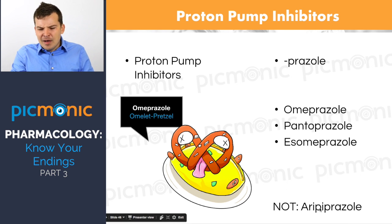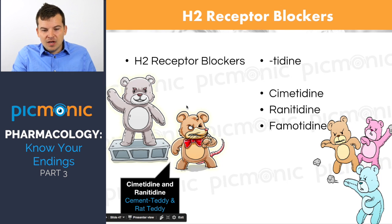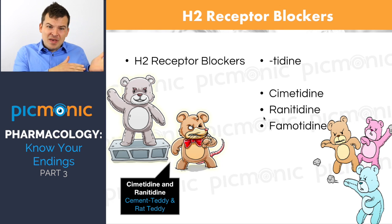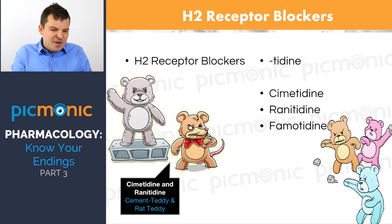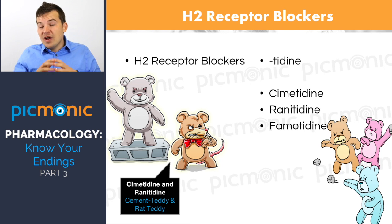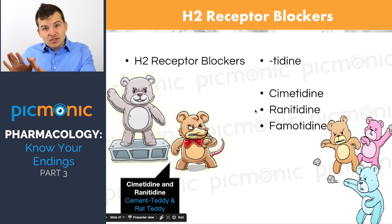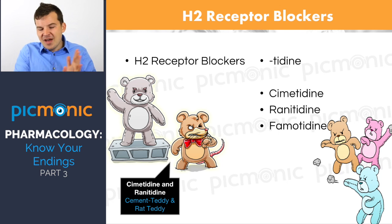Note that aripiprazole is NOT a PPI — it's a medication for depression. H2 receptor blockers, which we just mentioned as less effective than PPIs, include cimetidine and ranitidine — ending in -tidine. The Pickmonic images are a cement teddy for cimetidine and a rat teddy for ranitidine. These block H2 hydrogen receptors to reduce acid production. Cimetidine has more side effects than ranitidine.